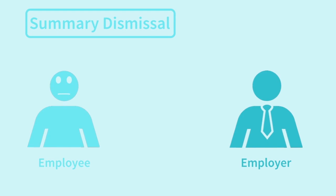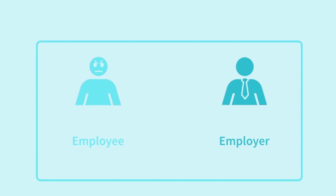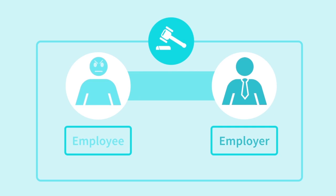Summary dismissal is where the employer dismisses an employee without notice, contrary to any notice provisions in the contract of employment. An employer may do so if an employee has committed a serious breach of conduct — for example, gross misconduct — and incur no liability for such action. If an employer has insufficient justification for such action, the employer is liable for breach of contract and the employee may claim the remedy of wrongful dismissal. See the case of Pepper v. Webb for a practical example of this issue.